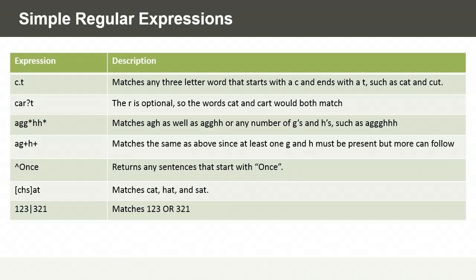In our third example, we've got a-g-g-star-h-h-star. The star symbol means that we are matching zero or more occurrences of the preceding element, so the preceding elements here are the letters g as well as h. In our fourth example, we have a-g-plus-h-plus. This is a little bit different than using the star symbol because with the plus symbol, we have to have one or more occurrences of the preceding symbol — the letter g and the letter h.